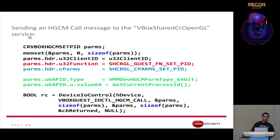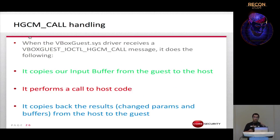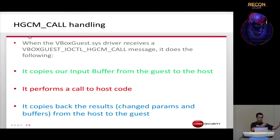When an application sends an HGCM Call message to the driver, the driver does three things: first it copies the input buffer from the guest to the host, then performs a call to host-side code, and finally copies the results back to the guest. The Chromium client must first open a handle to the bbox guest driver, send an HGCM Connect message, then send two HGCM Call messages to invoke fn_set_version and fn_set_pid — after which the communication is successfully established.